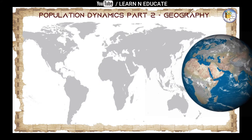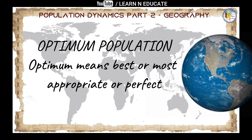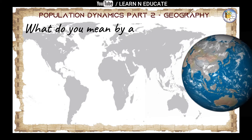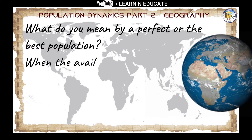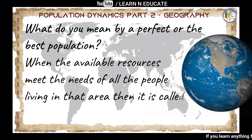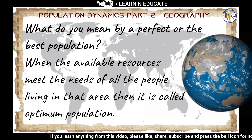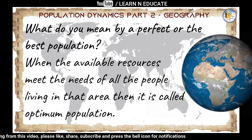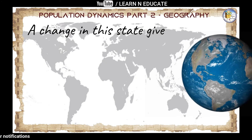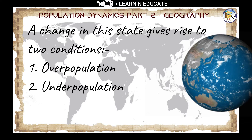Before we start with overpopulation and underpopulation, it's very important to know what is optimum population. Optimum means best, most appropriate, or perfect. When the available resources meet the needs of all the people living in that area, it is called optimum population. In other words, optimum population is a state of balance between population and the available resources in a particular area. A change in this state gives rise to two conditions: overpopulation and underpopulation.